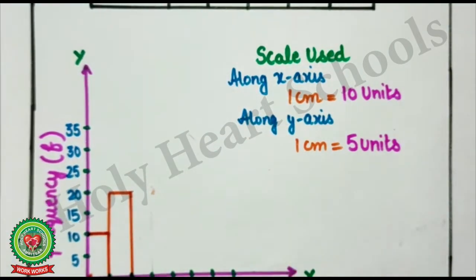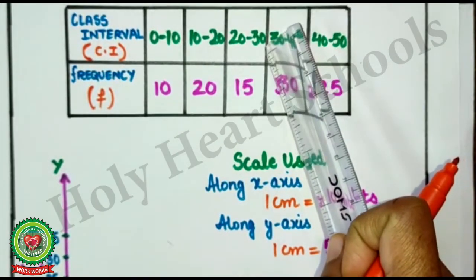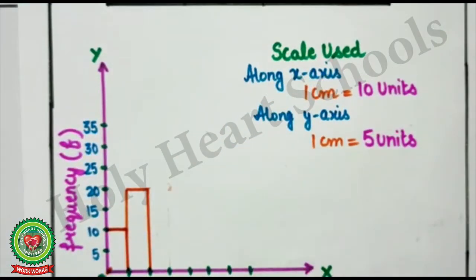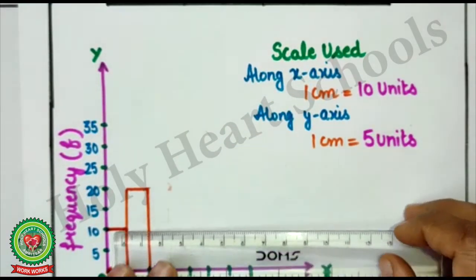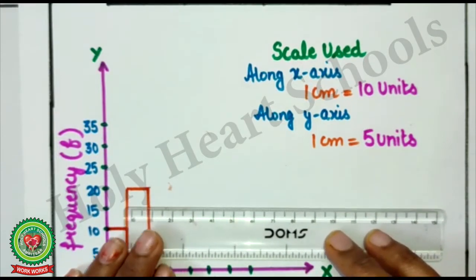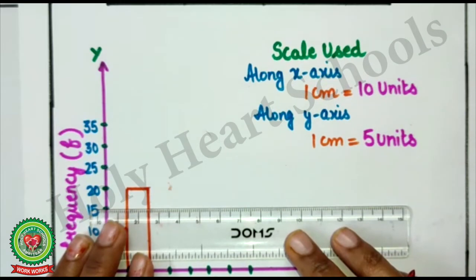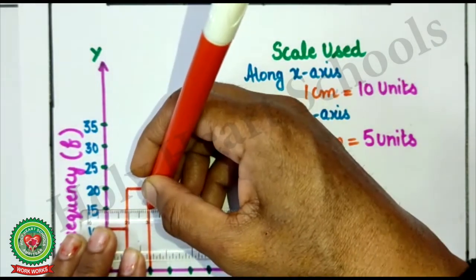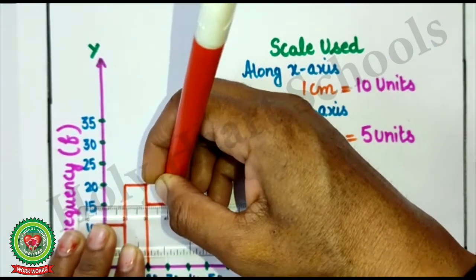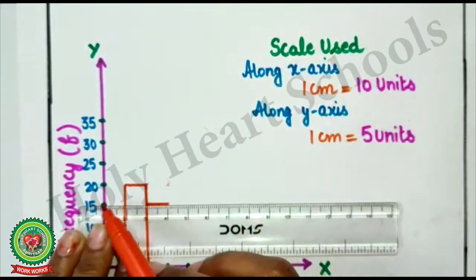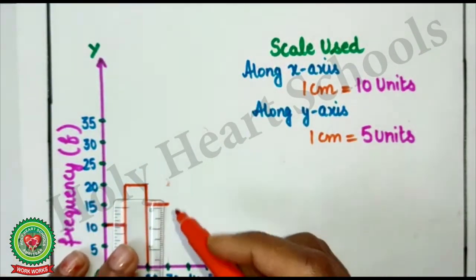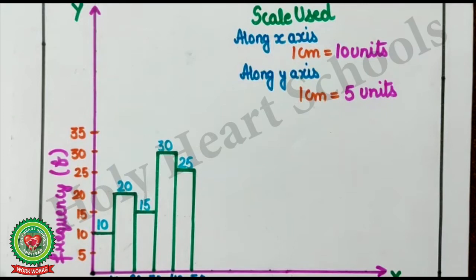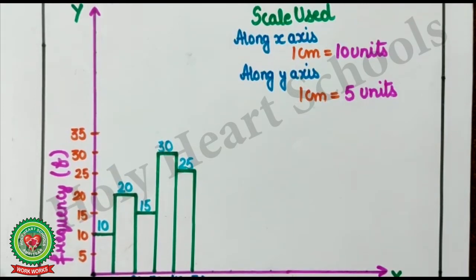Now, similarly. See the next one. 20 till 30. Frequency is 15. So, now here. When you will see from 15. This is 15. So, from 15. I have to select. Distance of 1 cm. Here, you can see. Height is corresponding to 15. Now, you will join it. At 30. So, in this way, you will get final presentation of histogram.